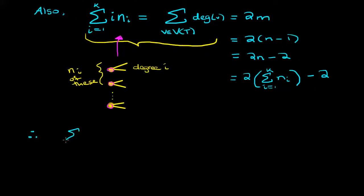Therefore, the sum of the i times n_i for i equals 1 to k minus the right hand side, which is now 2 times the sum of the n_i's and then plus 2, is equal to 0.